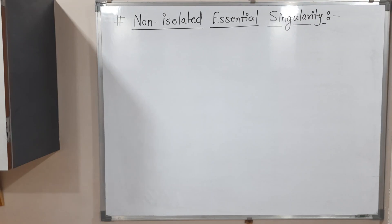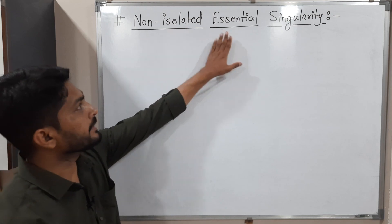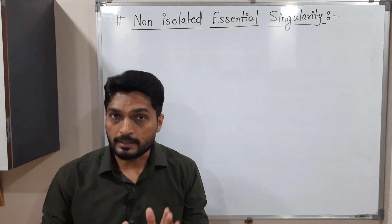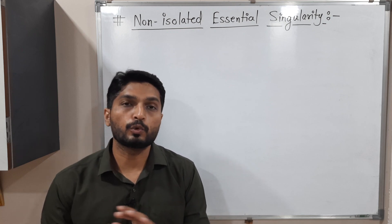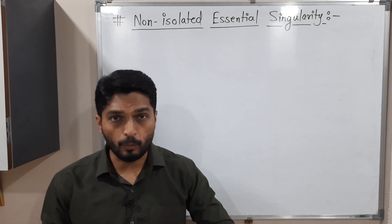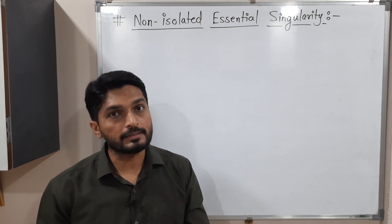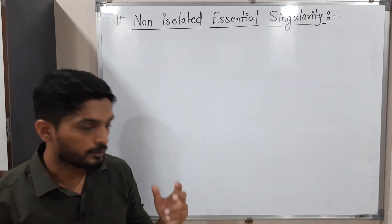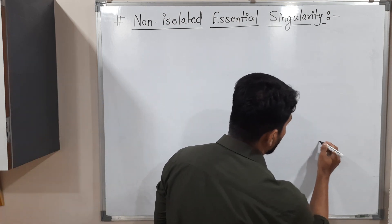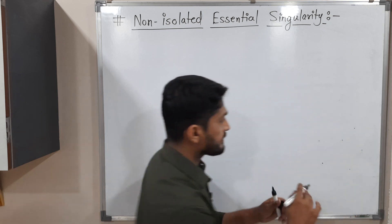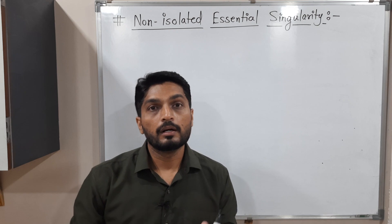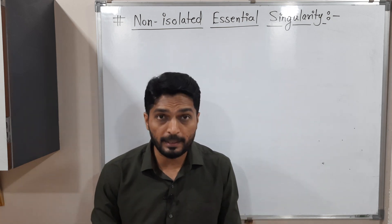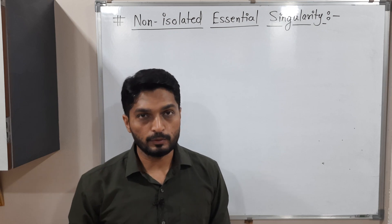In this video we are going to discuss the concept of non-isolated essential singularity. There are three words, so we will discuss their meanings one by one. Singularity is a point where the function is not analytic — generally, if the denominator at that point is zero, the function is not analytic, and it is a singularity. There are two types of singularities: isolated and non-isolated. If singular points are distinct and away from each other, we say isolated singularities. If singular points are very close to each other and we cannot distinguish or separate them, we call them non-isolated singularities.